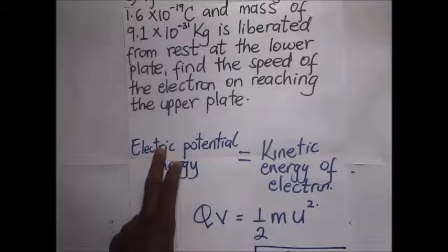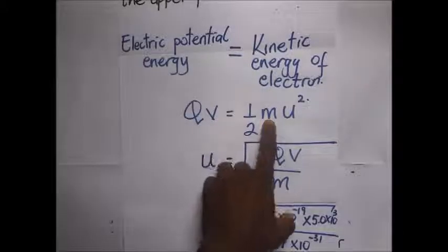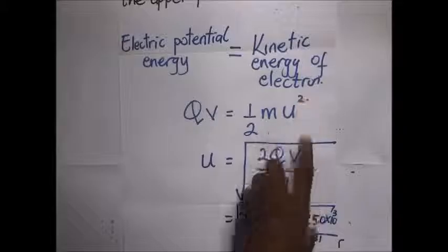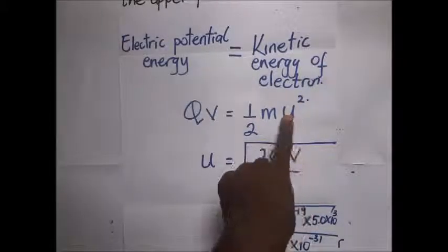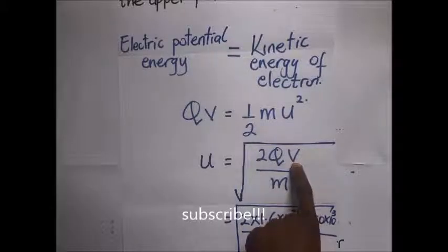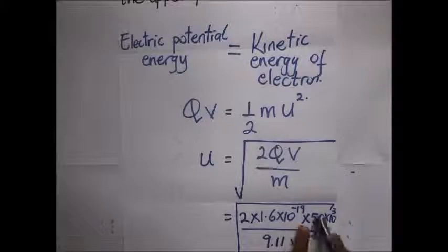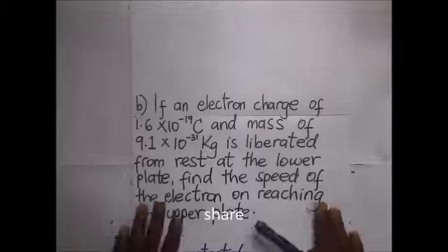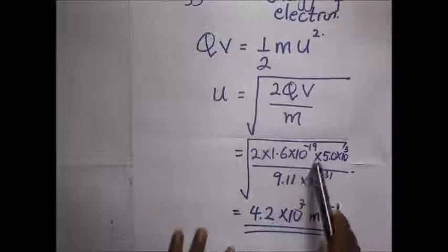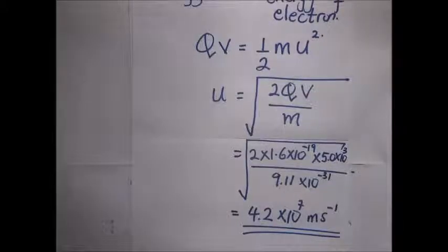The electric potential energy, which is the work done qV, is equal to the kinetic energy of the electron: ½mv². Making v the subject of the formula, v = √(2qV/m). Substituting: 2 times the charge 1.6×10⁻¹⁹, times the potential difference 5.0×10³ volts from our previous result, divided by the mass of the electron 9.11×10⁻³¹ kilograms. This gives us a final answer of 4.2×10⁷ meters per second — the velocity with which the electron moves.